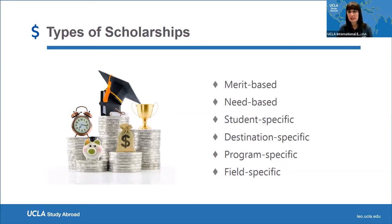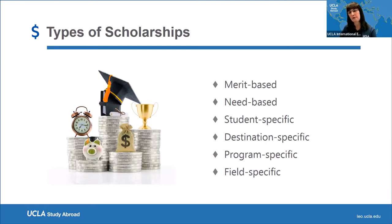Then we have destination-specific scholarships, which are basically to motivate students to go to a specific destination or a specific university. If you're interested in studying abroad but don't think you can quite afford it, this is one type of scholarship you should look into. The more flexibility you have for the destination, the more scholarships you may find that are less competitive or more affordable.